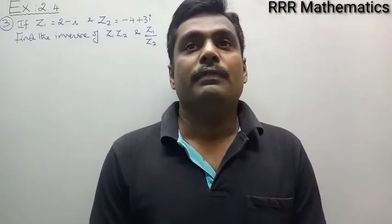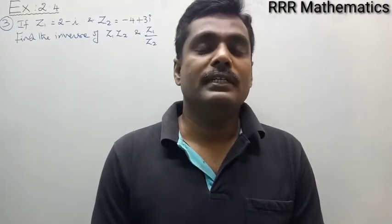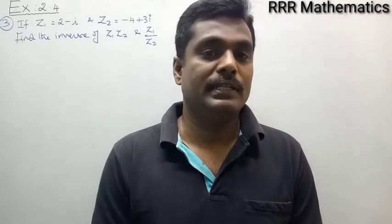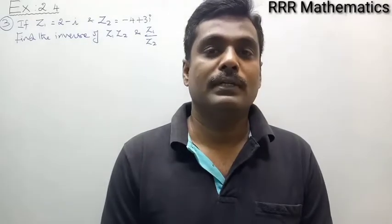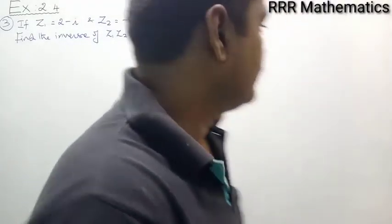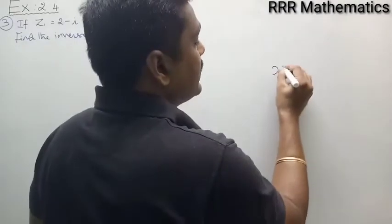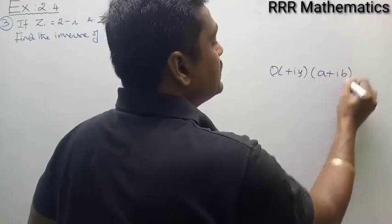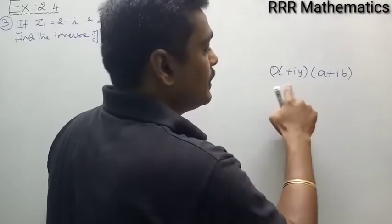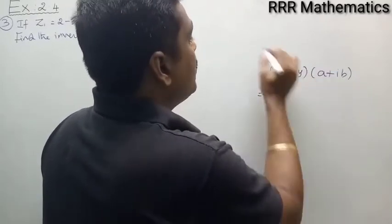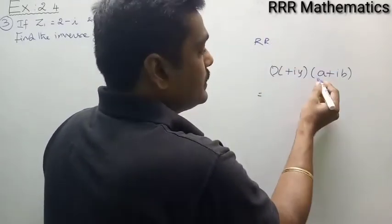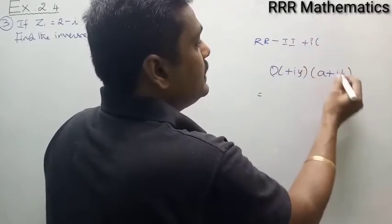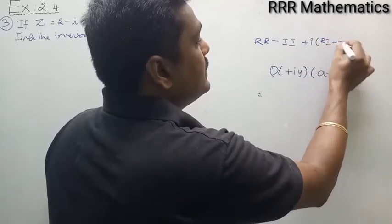One more point: if you are going to multiply a complex number and its conjugate, it's very simple — which is nothing but the sum of the squares of the real part and imaginary part. Suppose you are going to multiply two different complex numbers, let me explain in a simple way. For example, x plus iy and a plus ib are two different complex numbers. The simple way is: real part into real part minus imaginary part into imaginary part, plus i times real into imaginary and imaginary into real.